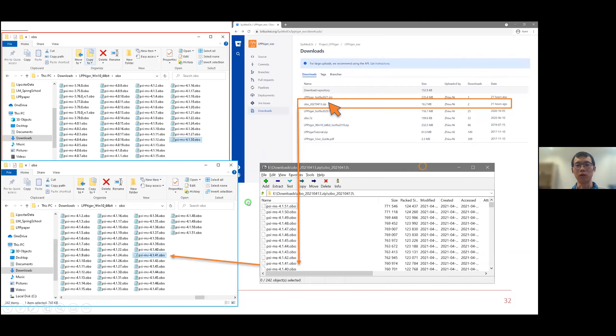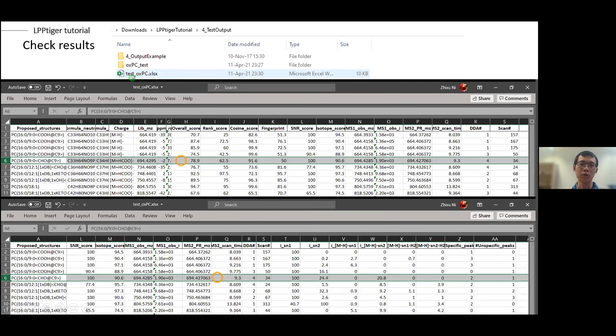Then we get our results. We can first open this summary Excel table. Here we can see the identifications and then the overall score, each separate score, and additional information. For example, the retention time and the relative intensity of main fragments.